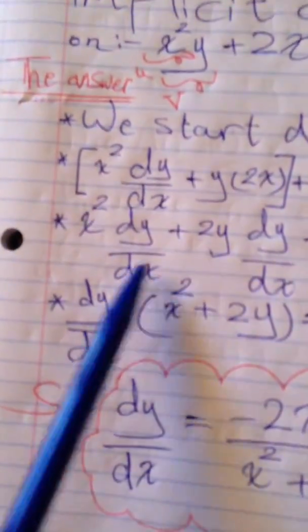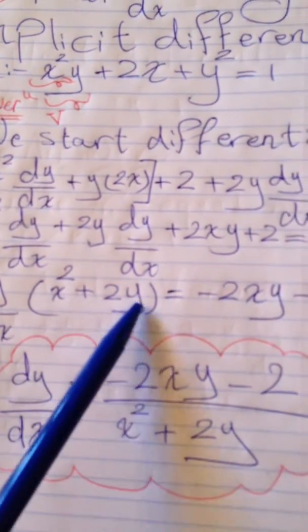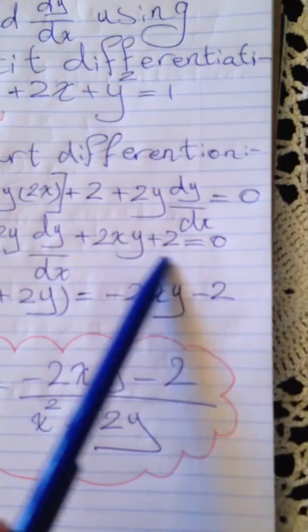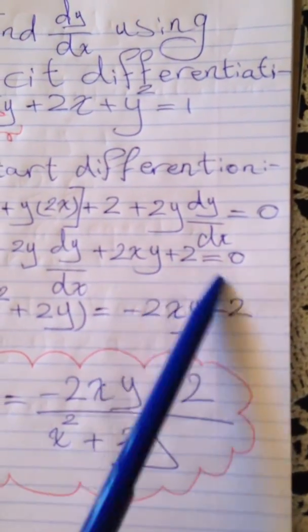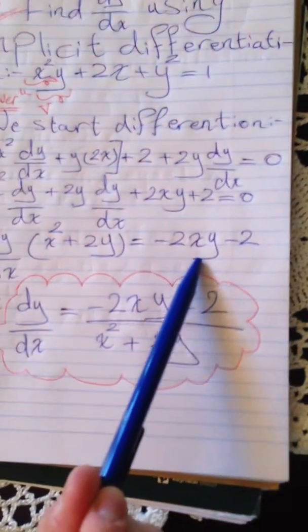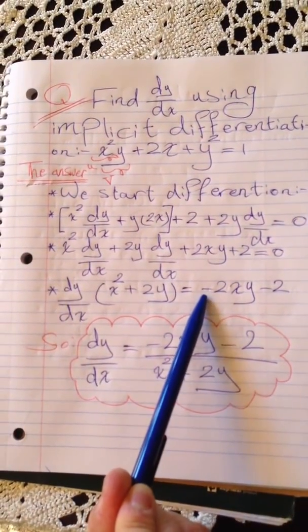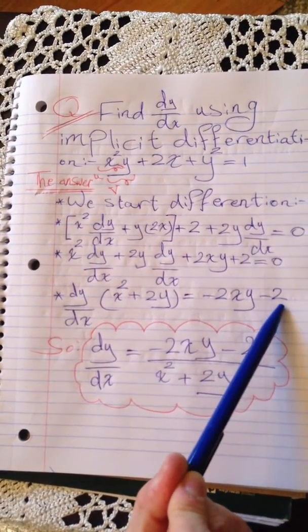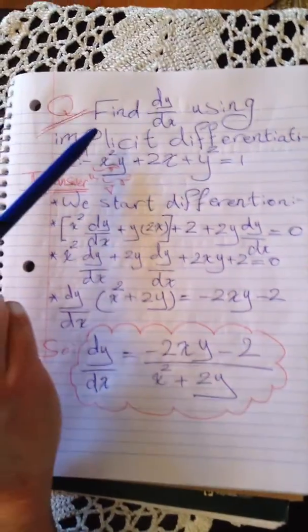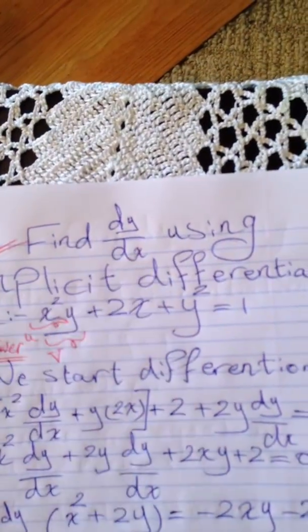When we take the common factor out, we're left with x² plus 2y. We take those two terms to the right of the equation, and the signs will be opposite: negative 2xy, negative 2.